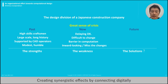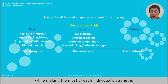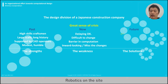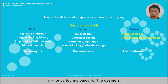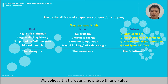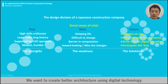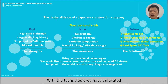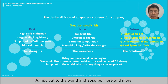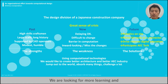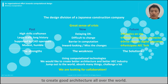Creating synergistic effects by connecting digitally, while making the most of each individual's strengths, is our aim. Robotics, hybrid work, craftsmen and robots, Rhino and Grasshopper tools as a connector, in-house technologies for designers, driving internal digital education, participating in ACTEC to touch the world — we believe that creating new growth and value will be our new strength. We want to create better architecture using digital technology, and we also want to create a better construction industry. With the technology we have cultivated, we are committed to becoming Japan's top digital company, reaching out to the world. Little by little, our efforts led to this place today. We are looking for more learning and collaboration opportunities.